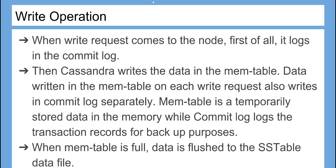When a write request comes to the node, first it logs in the commit log. Then Cassandra writes the data in the mem table. Data written in the mem table on each write request also writes in the commit log separately. The mem table is temporarily stored data in memory, while the commit log records transactions for backup purposes. When the mem table is full, data is flushed to the SSTable data file.